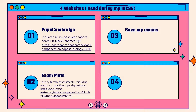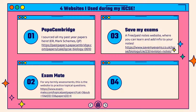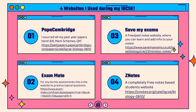Number three is Save My Exams, one of the most popular notes websites I've seen. It has both free and paid notes where you can learn and add info to your notes, covering CIE, Edexcel, AQA, and many subjects. Number four is ZNotes — a free, student-based notes website completely designed by students who do these subjects. I'm currently using it for chemistry. I'll link the biology version below.